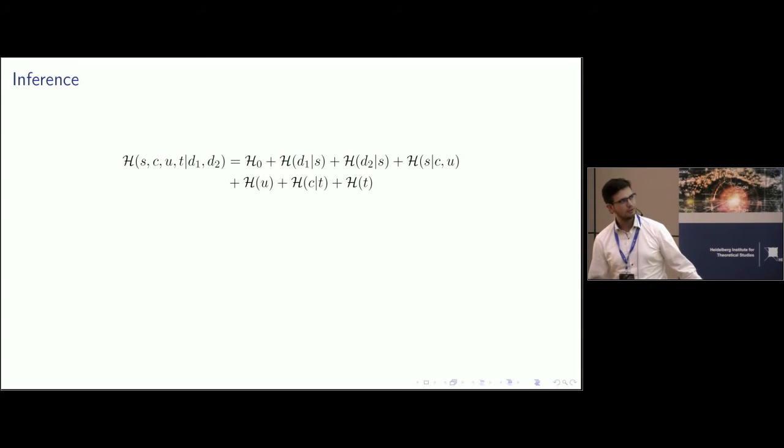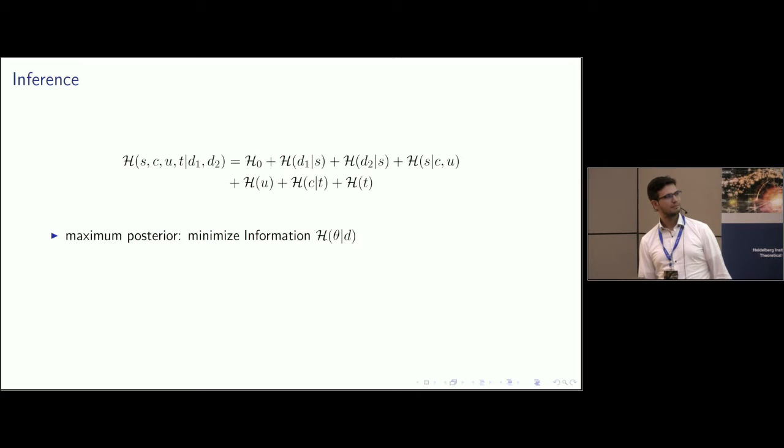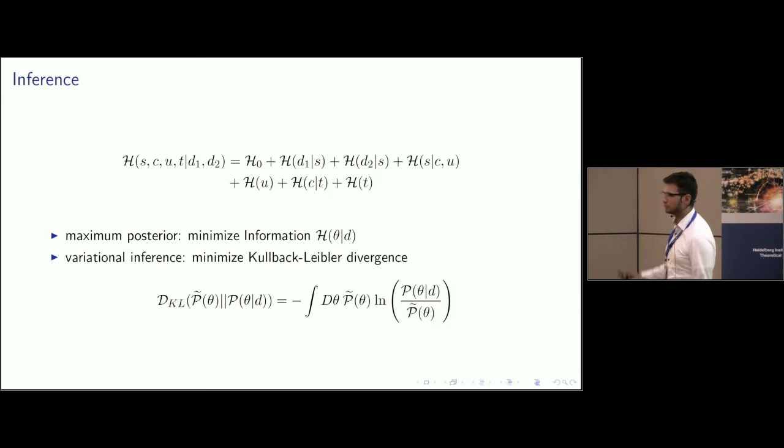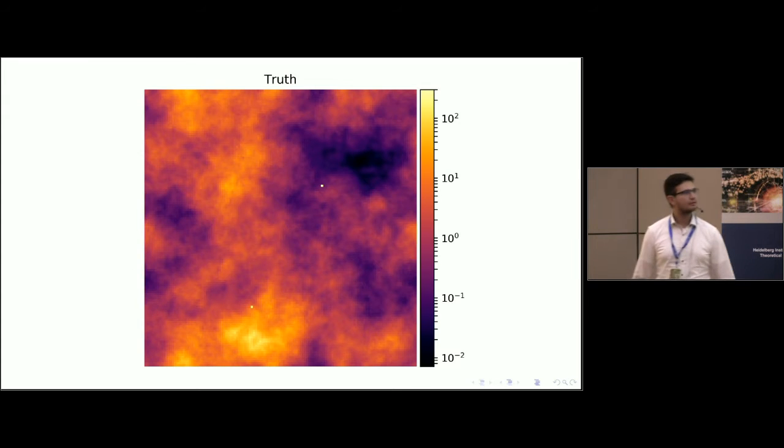And now we can, for example, solve it by using some maximum posterior. So we minimize the amount of information of some parameter configurations and we get maybe some results. But typically this is not enough. Especially if we approximate it like this, we ignore all kinds of posterior uncertainties. If we use some other probability distribution to approximate it with by some variational approach, for example, one can capture, in addition, the uncertainty between all the different quantities. And they are propagated to some extent correctly.